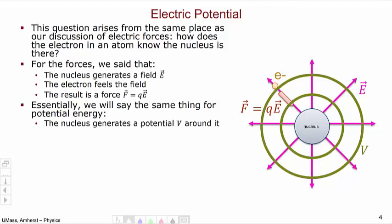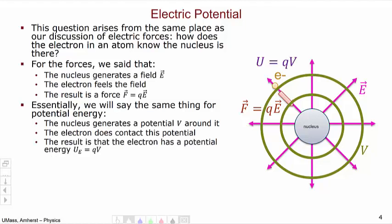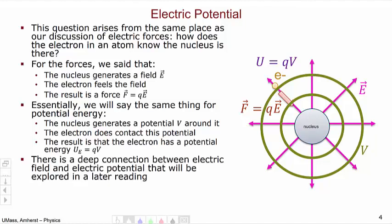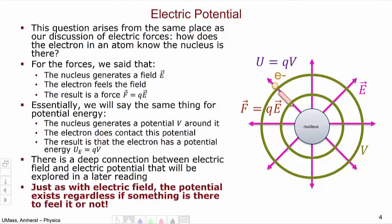Essentially we're going to say the same thing for potential energy. The nucleus is going to generate an electric potential V around it. You'll learn how to calculate these potentials from point charges in your text. The electron contacts the potential and as a result feels a potential energy QV. Just as with electric field, the potential exists regardless of whether there is something to feel it — so even if I were to remove the electron, the potential would still be present.